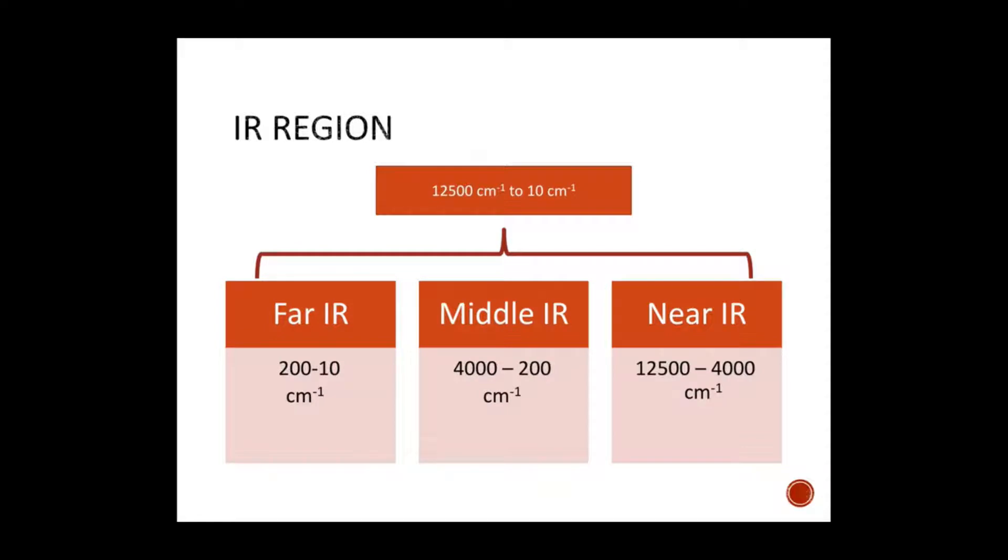That is near IR, middle or mid IR, and far IR. Near IR ranges from 4,000 to 12,500 cm⁻¹. Mid IR ranges from 200 to 4,000 cm⁻¹, and far IR from 10 to 200 cm⁻¹.